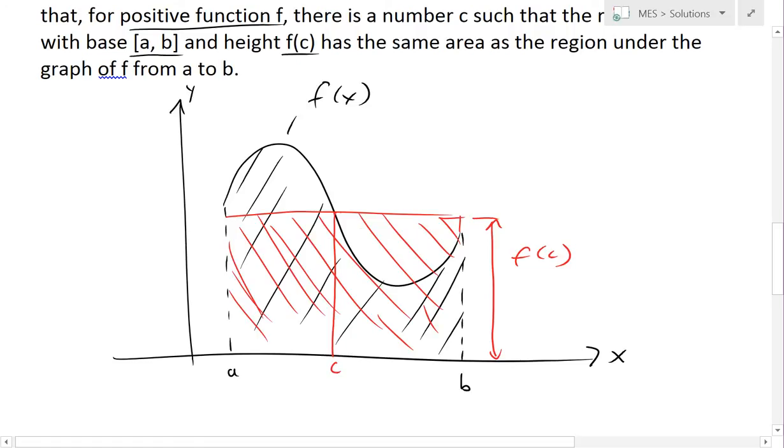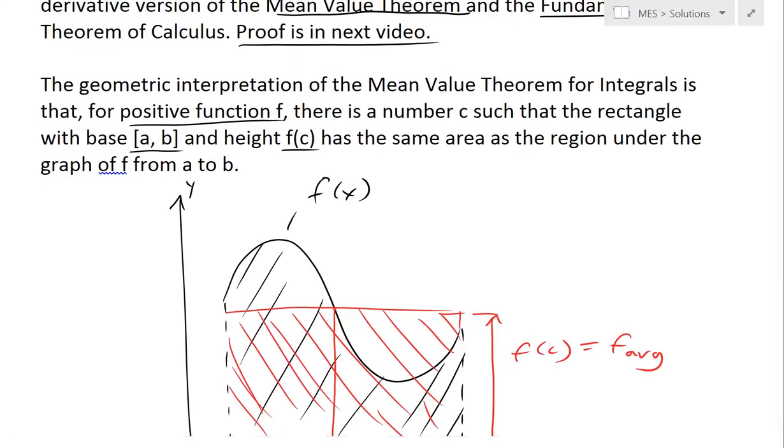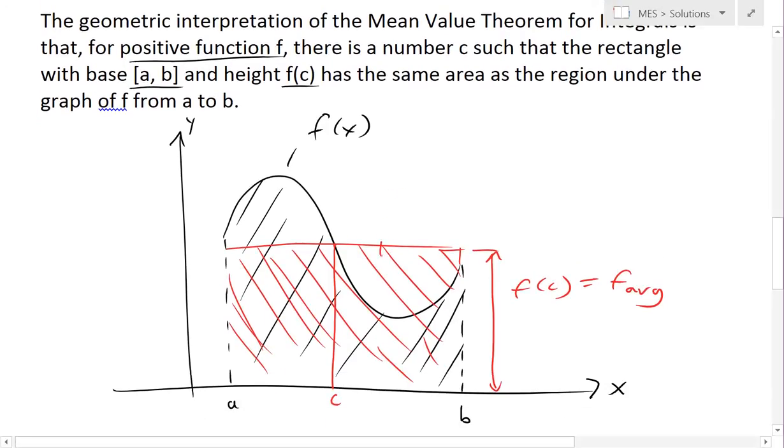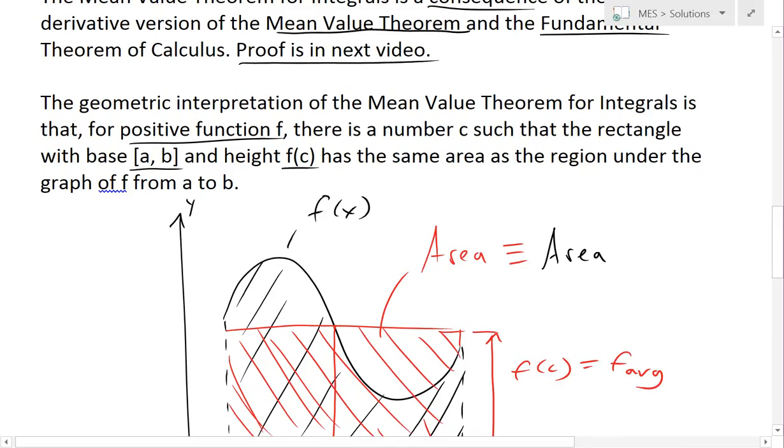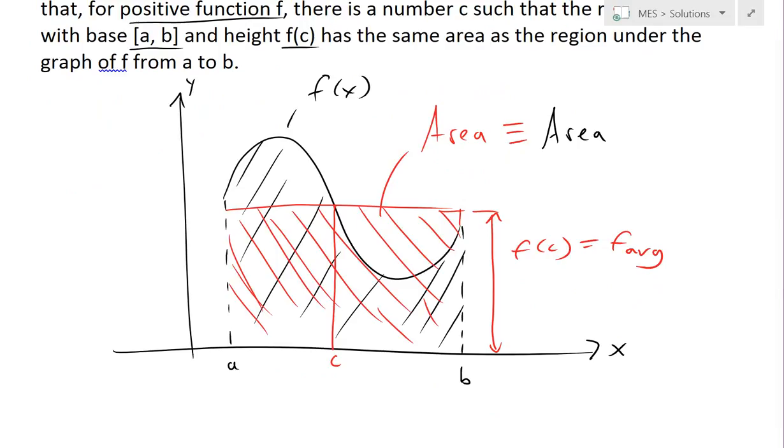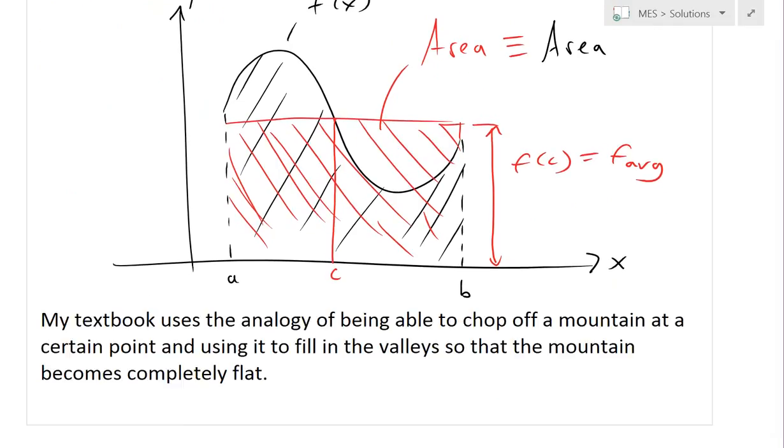So basically this value is going to have the average height and this equals to f_average. And it's basically saying that this area here, area in red, is equal to this area in black. And I'll just write that down right here. So area in black is equal to the area in red. And that is basically saying that for any continuous function, there is going to be a number c such that this is the case.